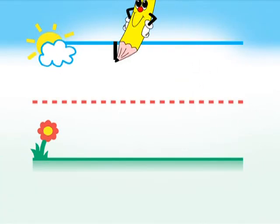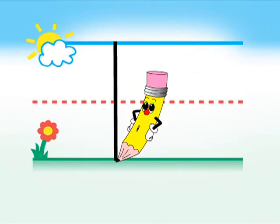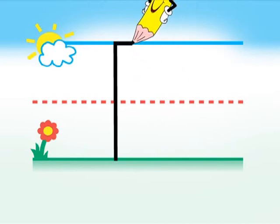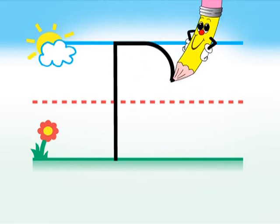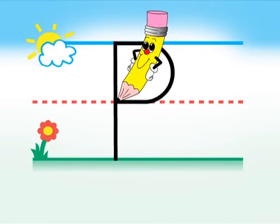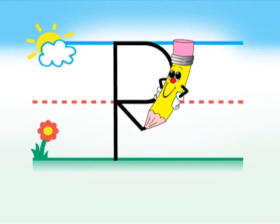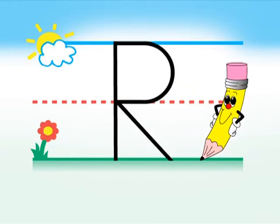Start at the sky and pull down to the ground. Go back to the sky and curve around to the fence, just like the letter P. Stop. Start at the fence and slant down to the ground. Great!